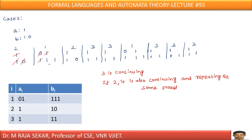Now we have two 1s remaining in the denominator. I need a domino whose numerator starts with 1. There are two such dominoes: domino 2 with denominator 10, and domino 3 with denominator 11. If I take the second domino, one 1 cancels, and now I have 10 remaining in the denominator. There is no domino whose numerator starts with double 1; only dominos 2 and 3 start with single 1.